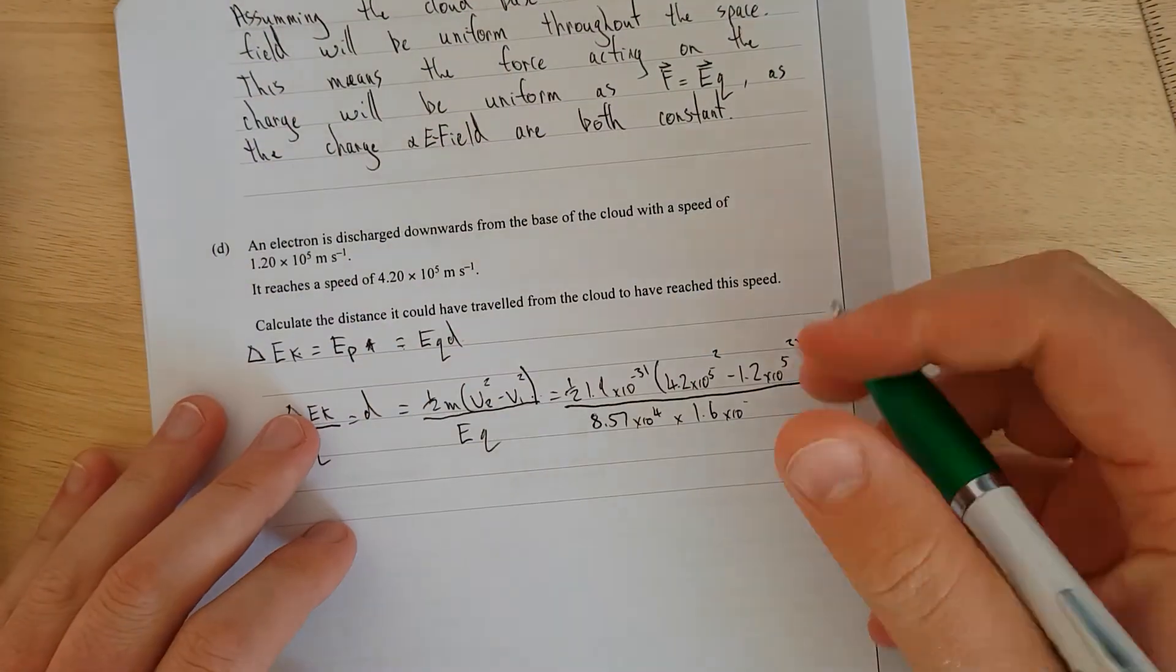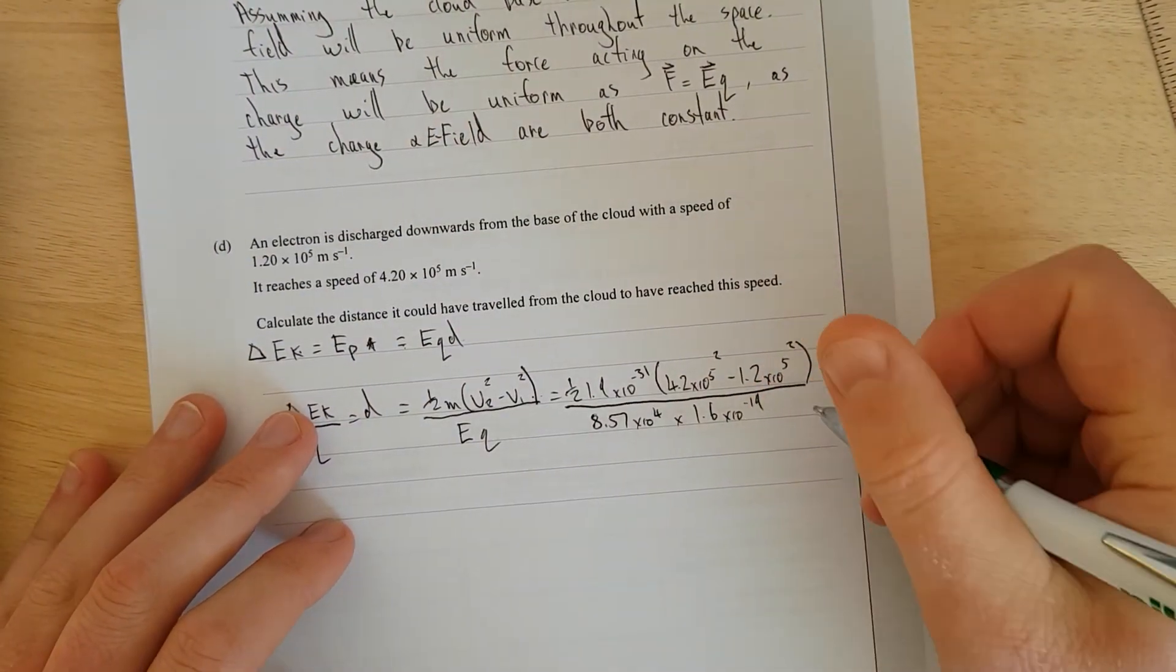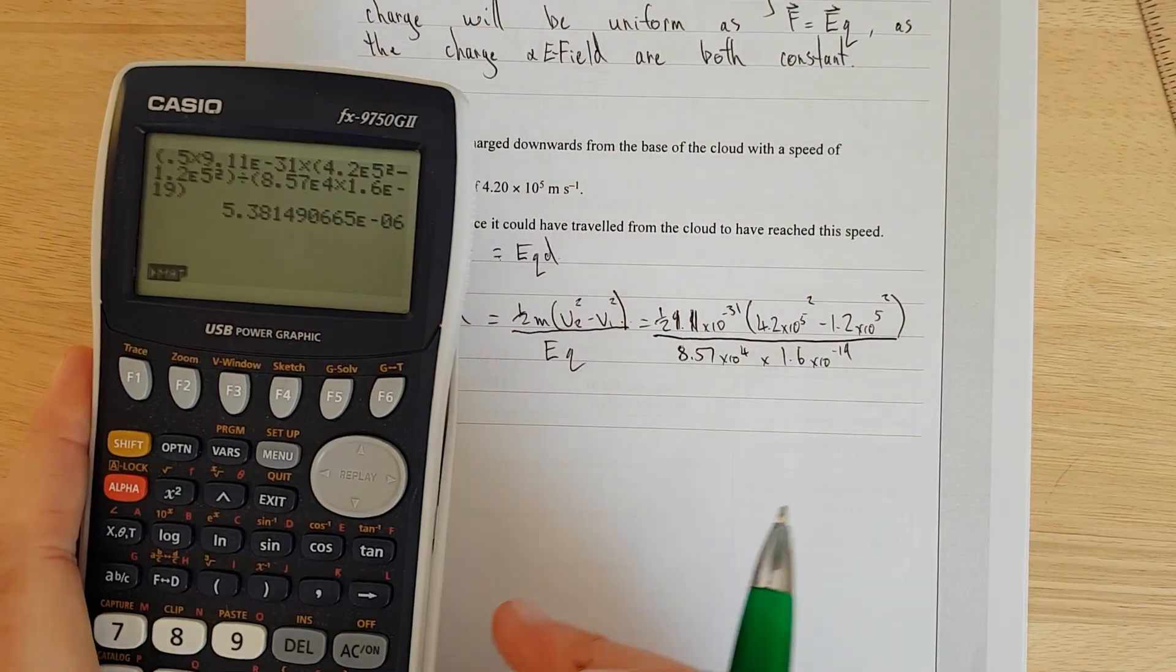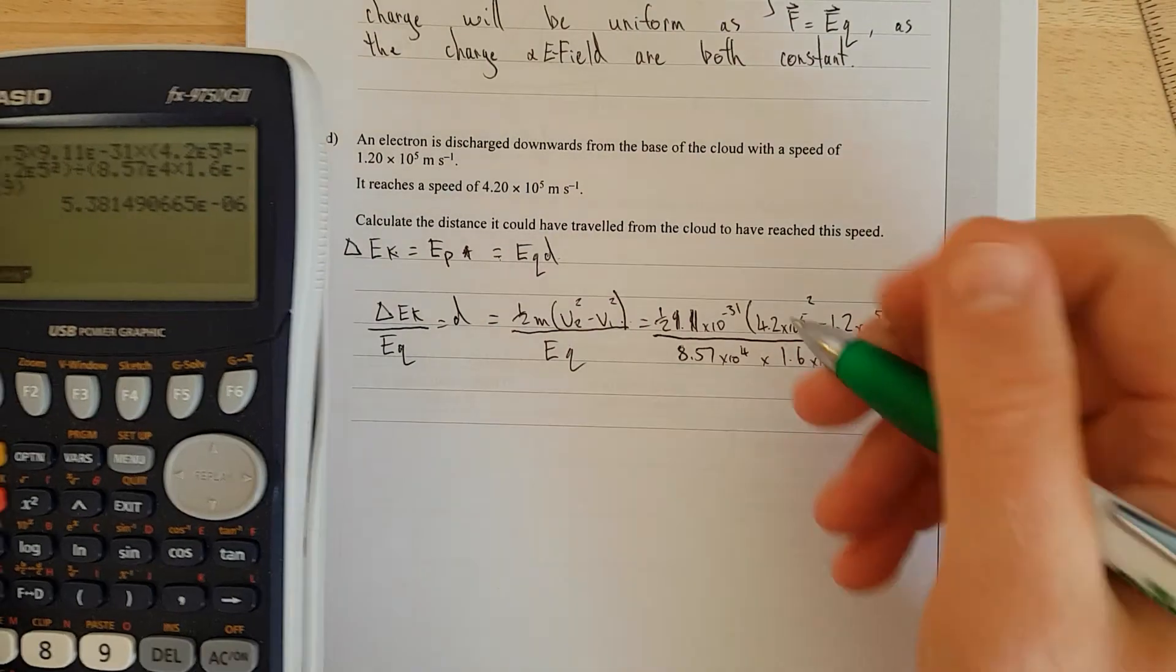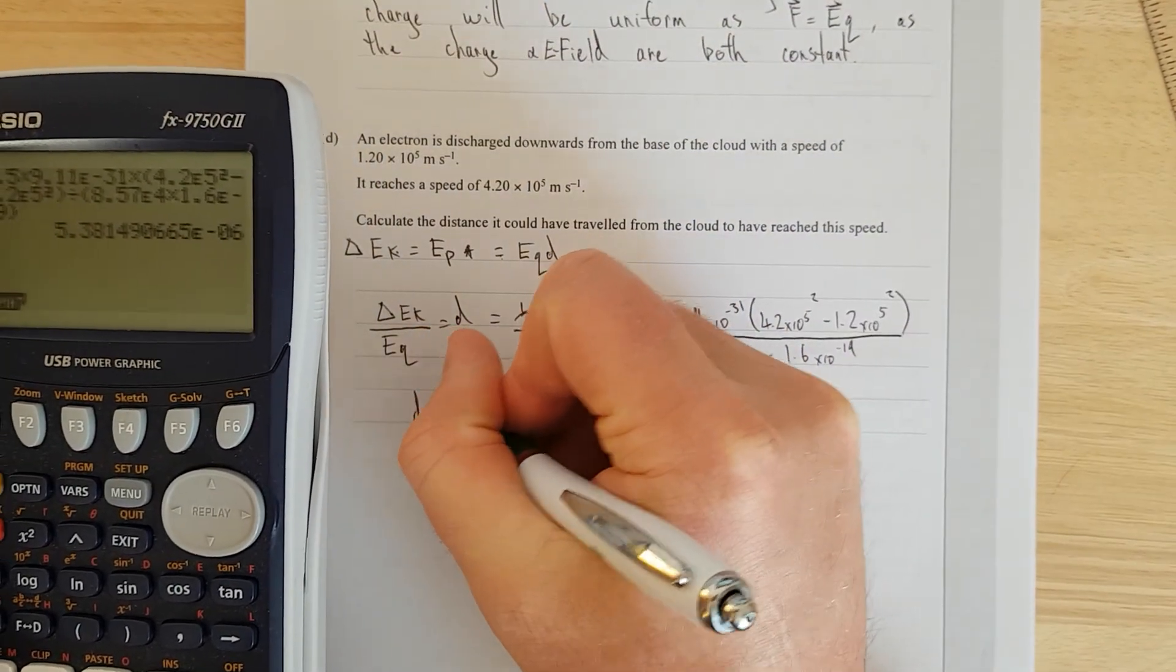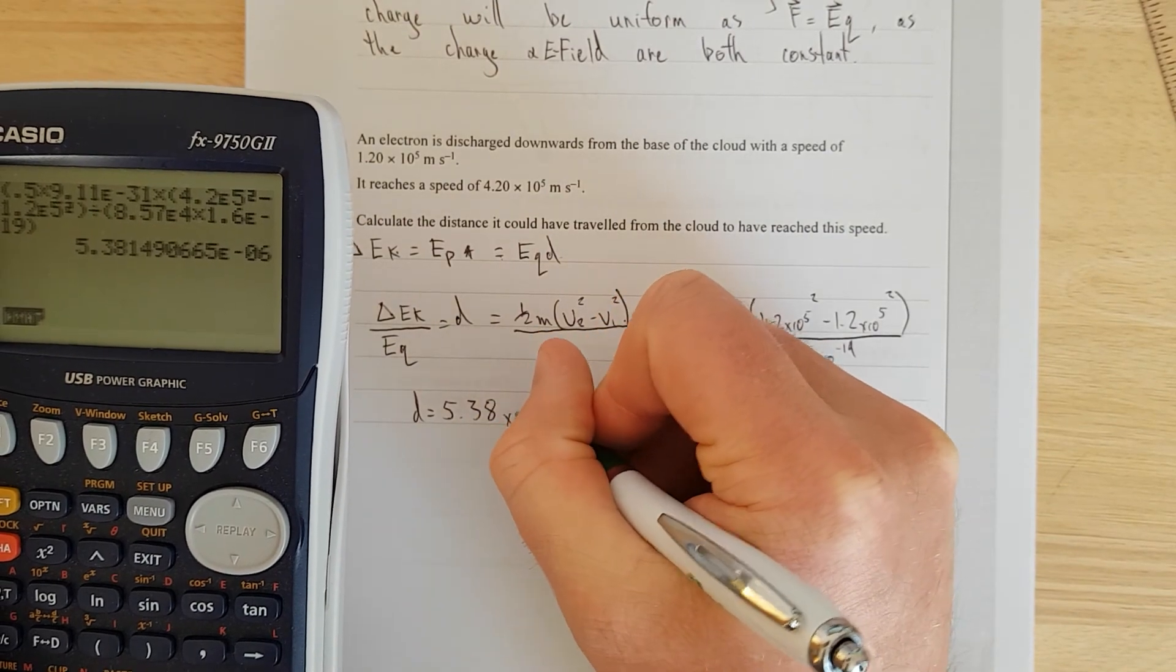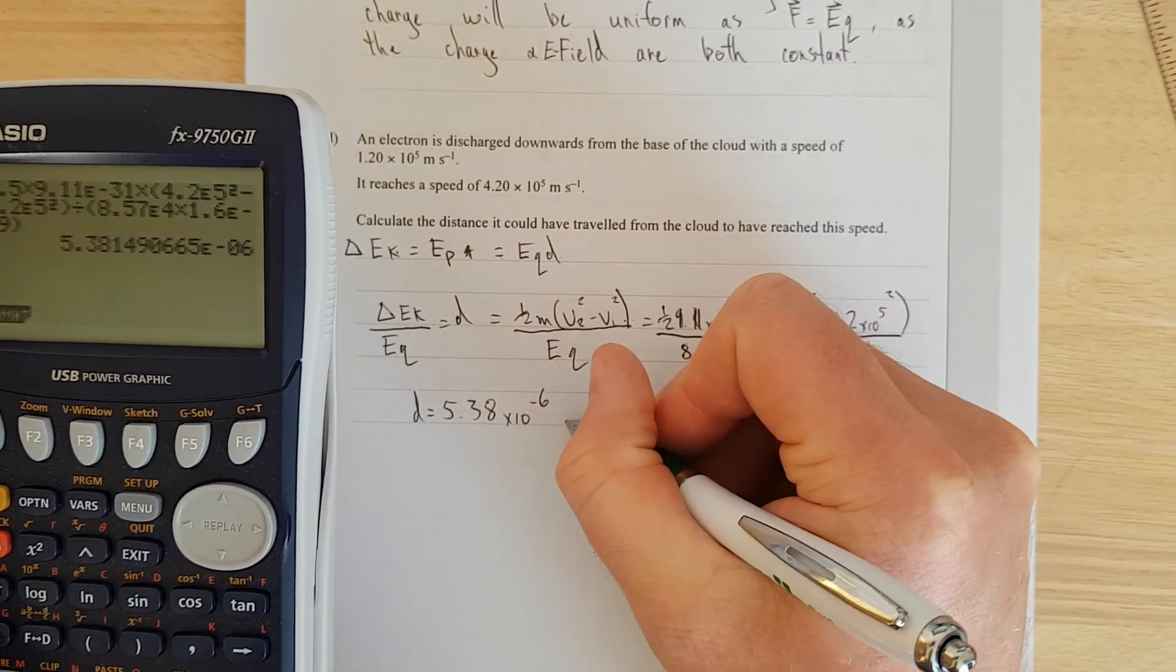I'll just quickly put that in the calculator. And that gives us an answer of D is equal to 5.38 times 10 to the negative 6 meters.